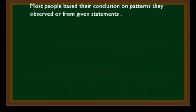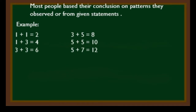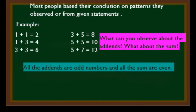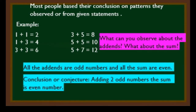Most people base their conclusions on patterns they observe or from given statements. For example: 1+1=2, 1+3=4, 3+3=6, 3+5=8, 5+5=10, 5+7=12. All the addends are odd numbers and all the sums are even. So for our conclusion or conjecture: adding two odd numbers, the sum is an even number.